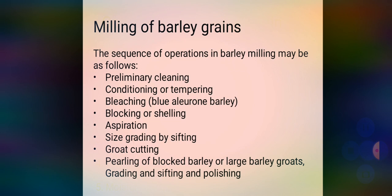The sequence of operations in barley milling is as follows: first, preliminary cleaning; then conditioning or tempering; then bleaching to remove the blue aleurone layer; then hulling or shelling of barley; then aspiration; then size grading by sifting; then groat cutting; and finally pearling of hulled barley or large barley groats, followed by grading, sifting, and polishing.